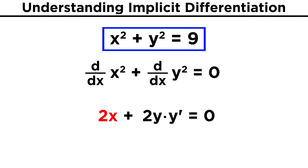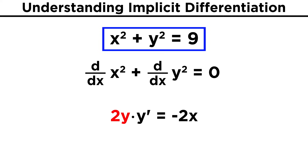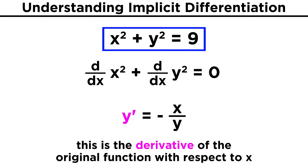Subtract two x from both sides, divide both sides by two y, and we are left with negative x over y. So this is y prime, or the derivative of the original function with respect to x.